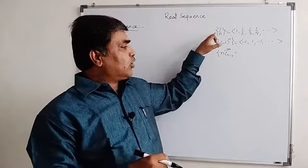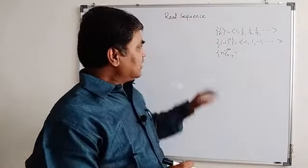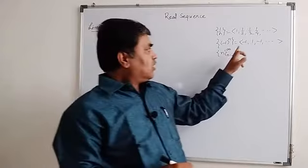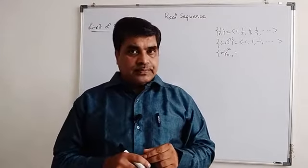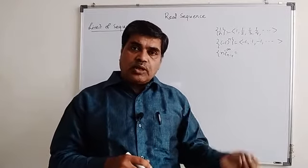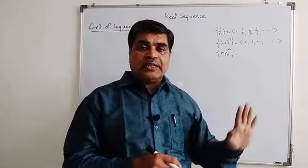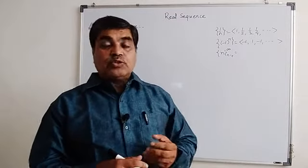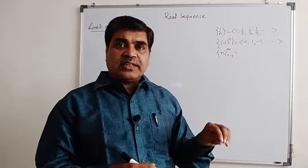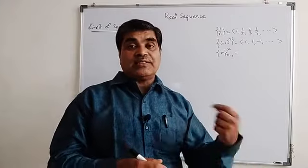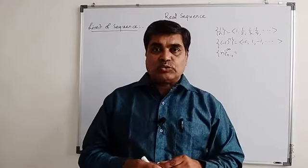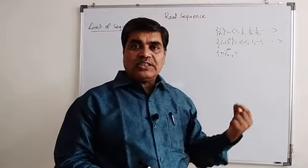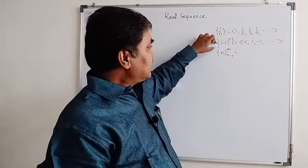We will say that 0 is the limit of the 1/n sequence. For the second sequence, (-1)^n: -1, 1, -1, 1, etc. For that sequence, odd places are -1, even places are +1. Even though n is too large, you will get terms at odd places to be -1 and terms at even places to be 1. So you are unable to say that all s_n are very close to a fixed number L. So this sequence has no limit.